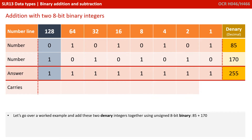A nice, simple, easy example to start with. We add up every column that has a 1 in it — so that's all of them: 128 plus 64 plus 32 and so on — and we get 255, which of course is the original numbers 85 and 170 added together.